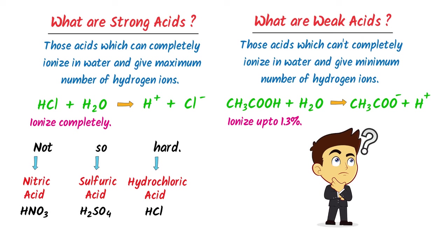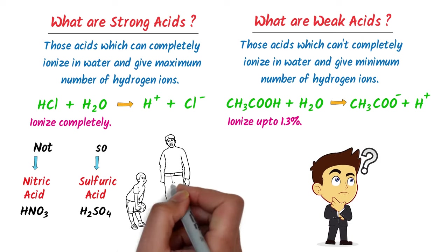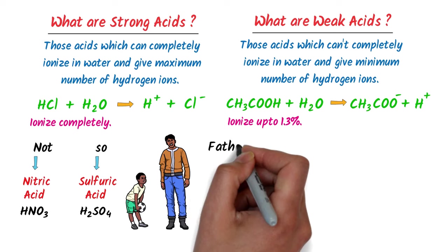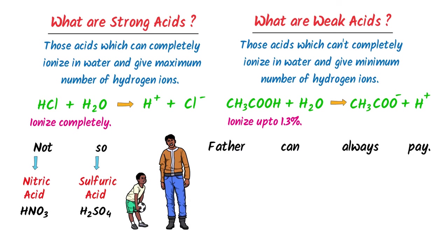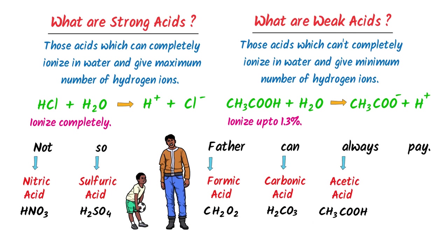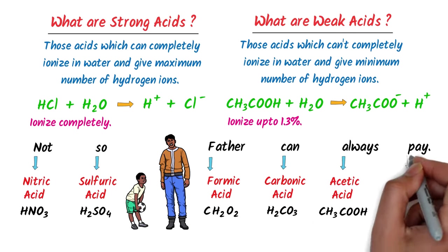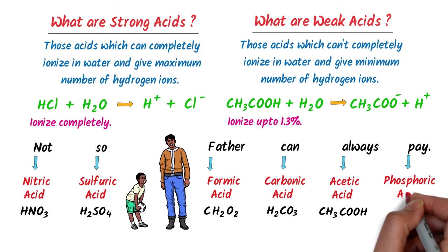How can we remember the important list of weak acids? I always use the trick 'father can always pair.' F stands for formic acid, C stands for carbonic acid, A stands for acetic acid, P stands for phosphoric acid. So this is the list of weak acids.